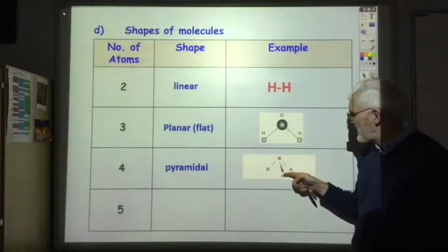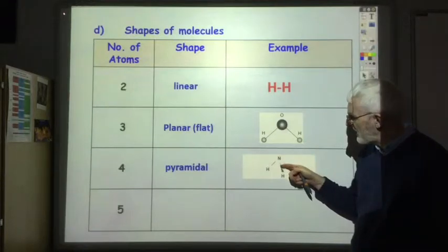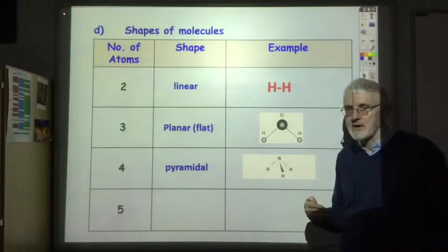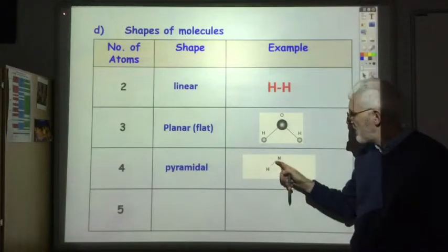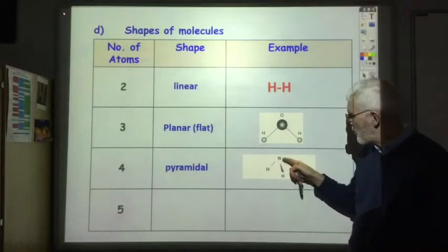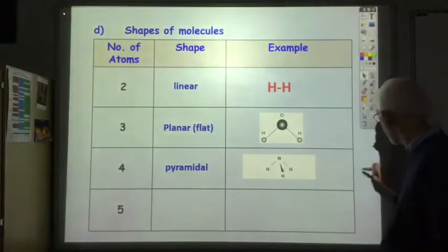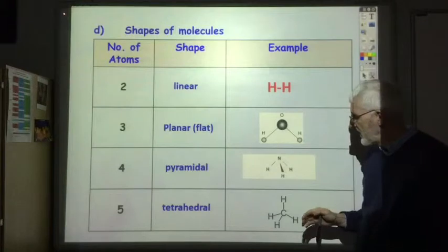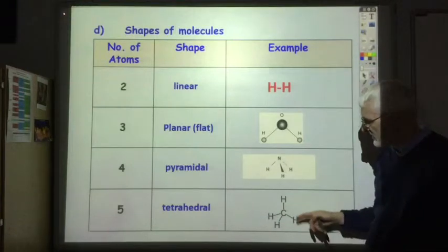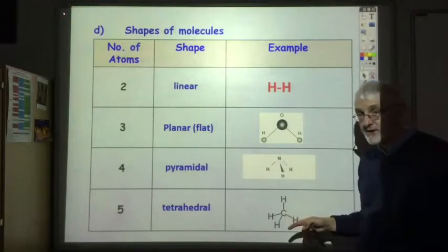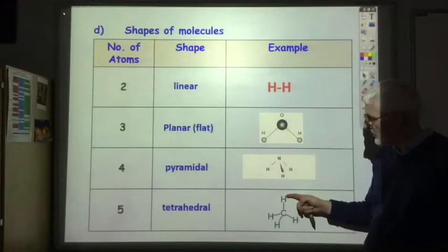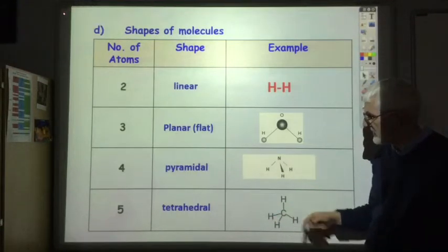In diagrams showing pyramidal molecules, dotted lines and bold lines may be used, but just make sure all the bonds are pointing downward. With five atoms you get a tetrahedral structure. CH4 is a classic tetrahedral molecule - one bond going up and the other three bonds going down.